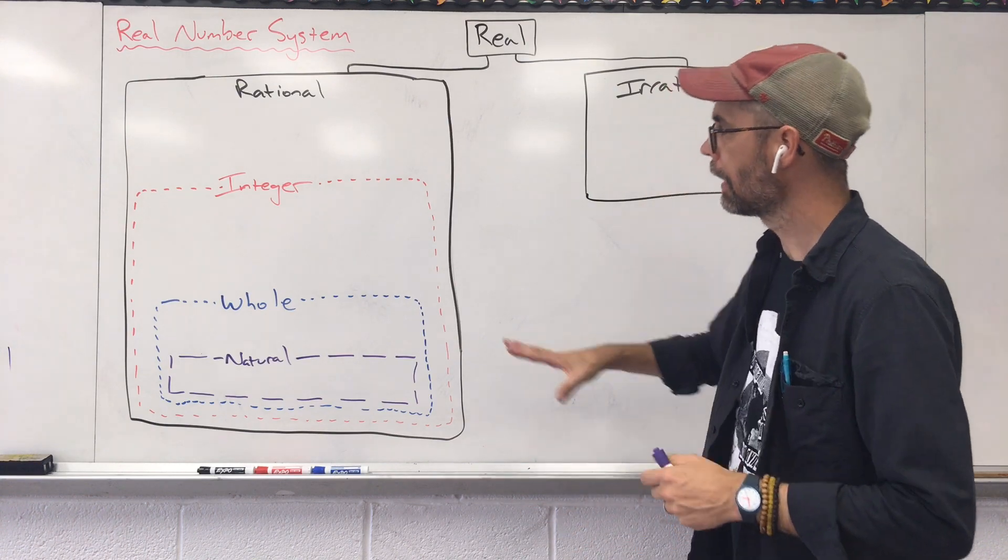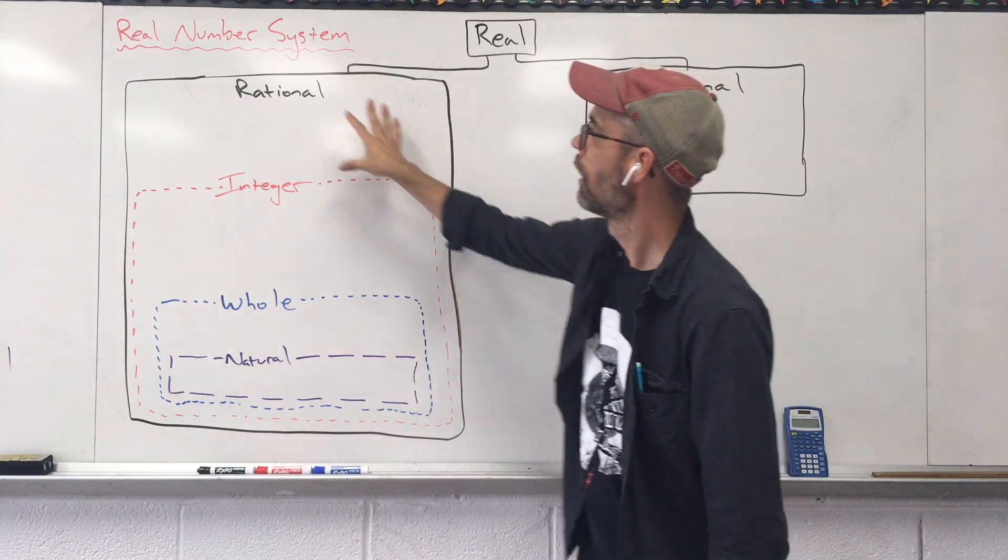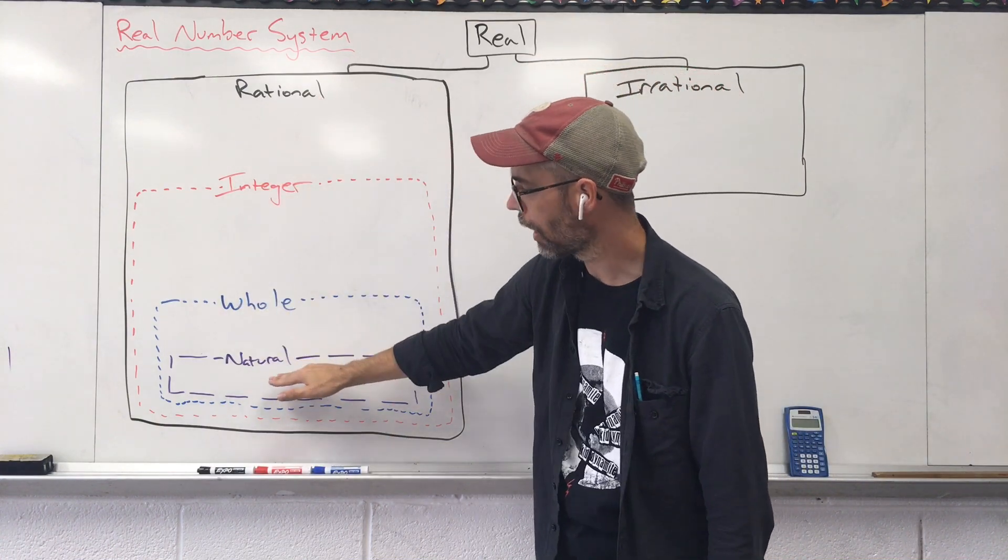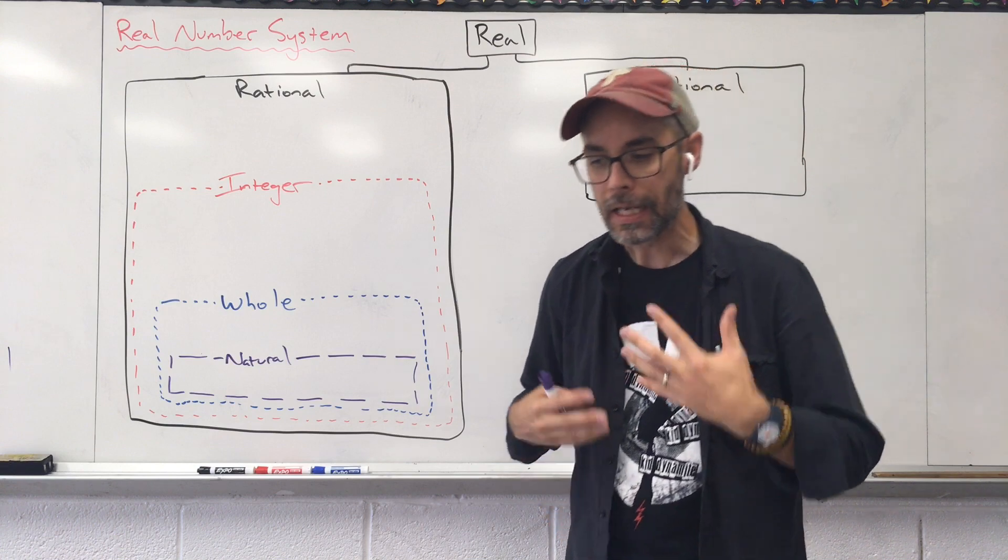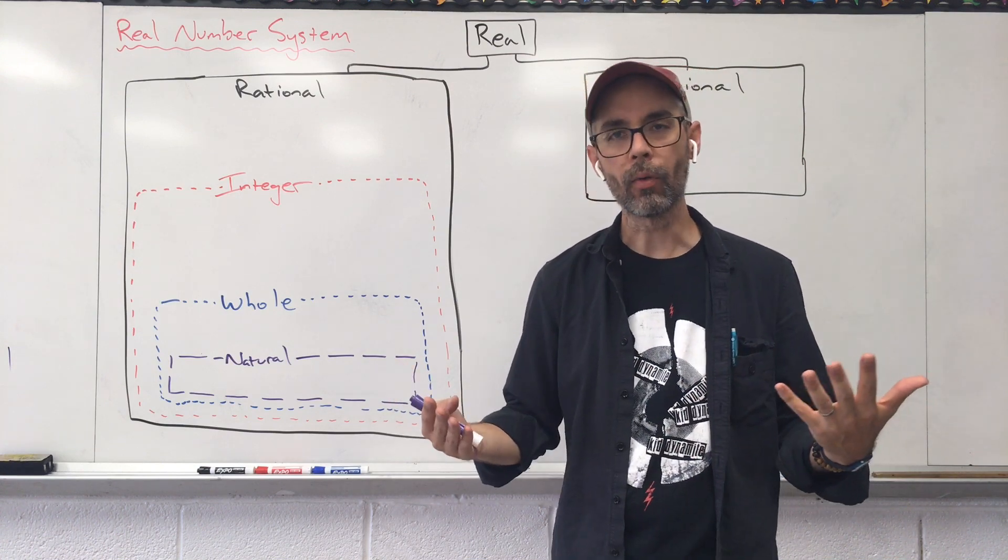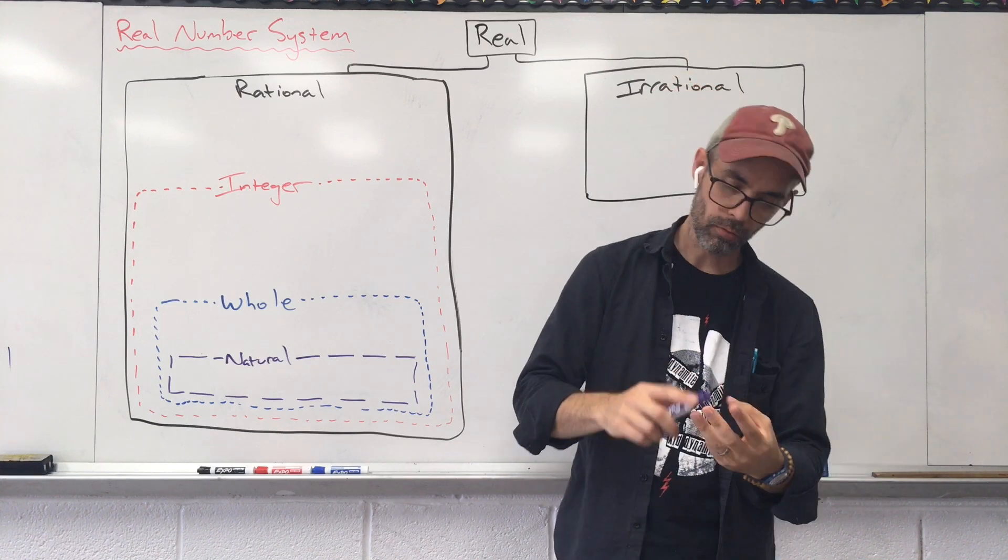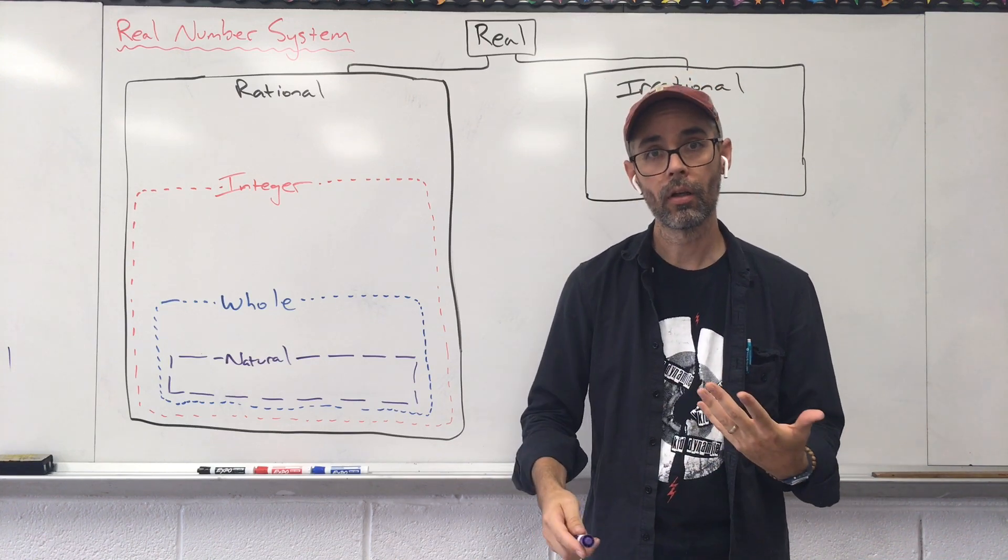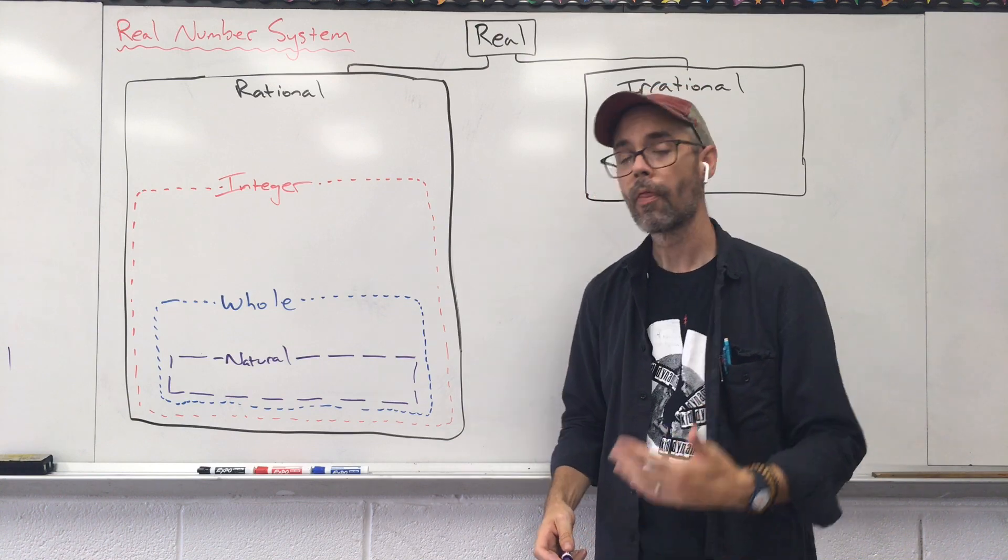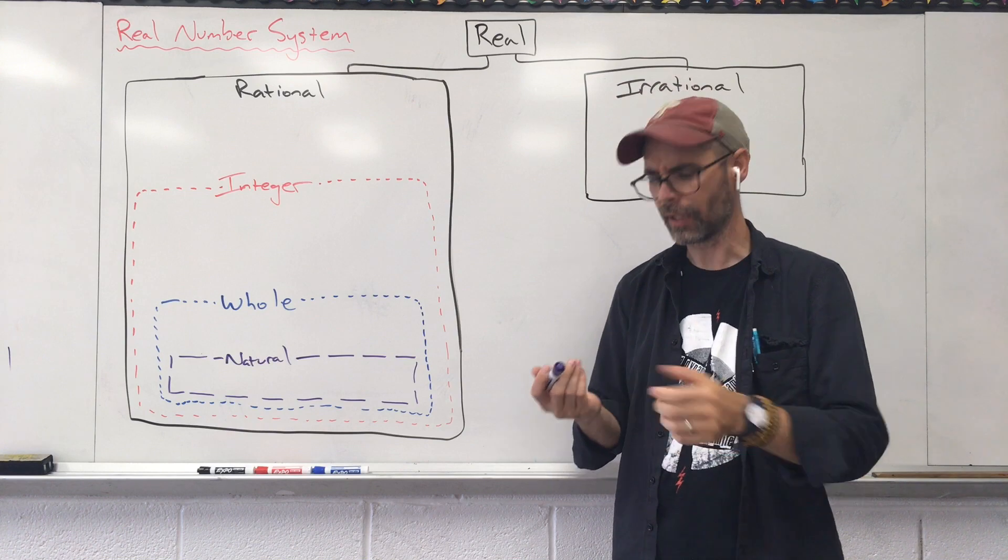Let's start inside this big box labeled rational all the way at the bottom. We're going to talk about something called natural numbers. A natural number, numbers you start counting with. I could ask you to start counting and you could say 1, 2, 3, 4, 5, and so on. Those are natural numbers. They naturally roll off that tongue in that order. We never want to start with zero. That'd just be weird.